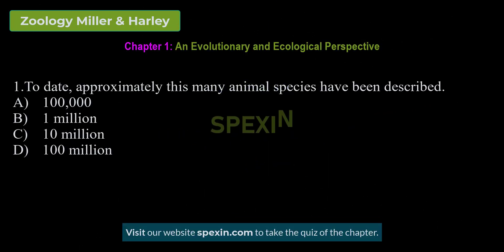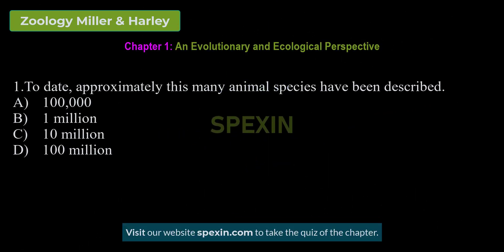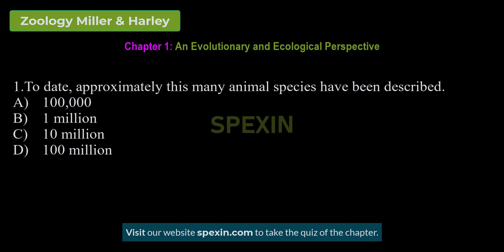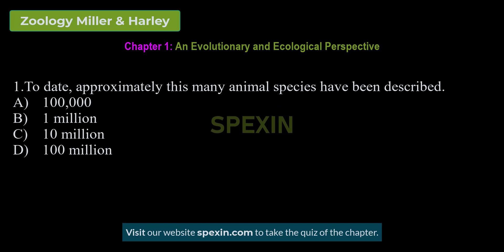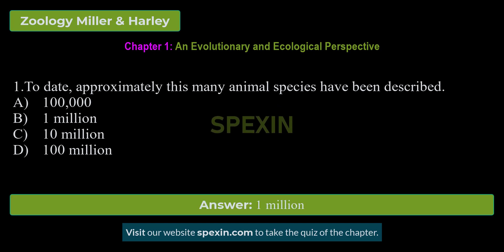To date, approximately how many animal species have been described? Options: 100,000 — 1,000,000 — 10,000,000 — 100,000,000. Correct answer: 1,000,000.